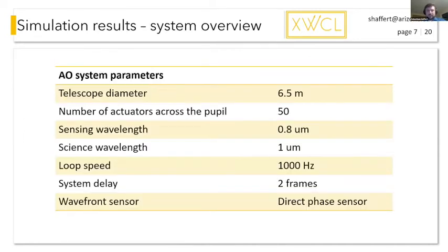So the system that I've simulated is similar to MagAO-X. So we have a six and a half meter telescope, which is similar to the Magellan Clay telescope. 50 actuators across the pupil. My simulations, I run them at a kilohertz with two frames of delay. And the wavefront sensor that I use for all the measurements is a direct phase sensor. So I just take the direct wavefront from the simulations because I want to take out the effects of the wavefront sensor in these simulations.